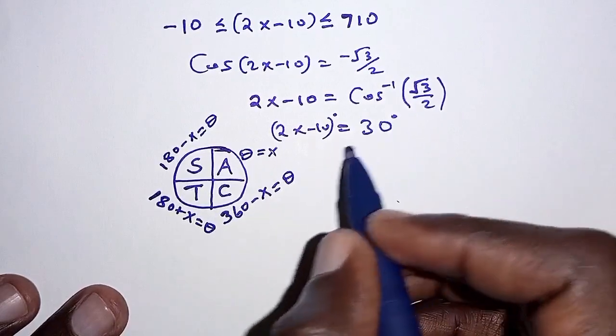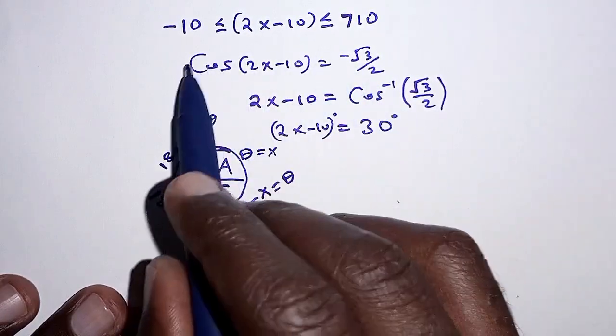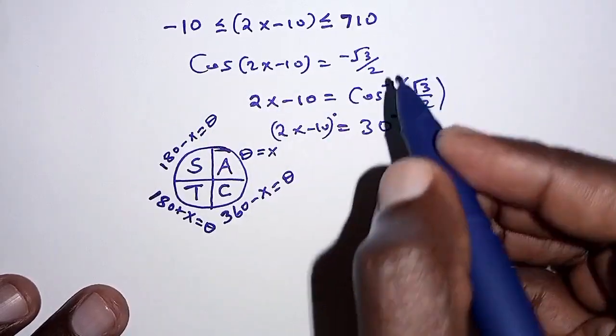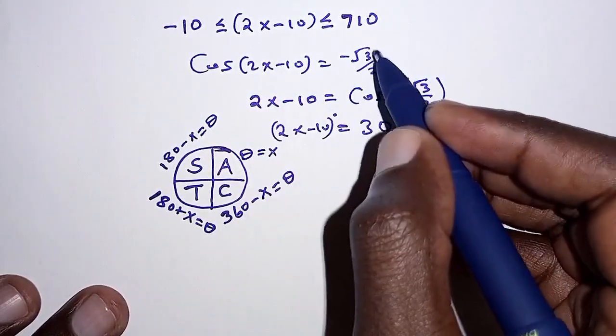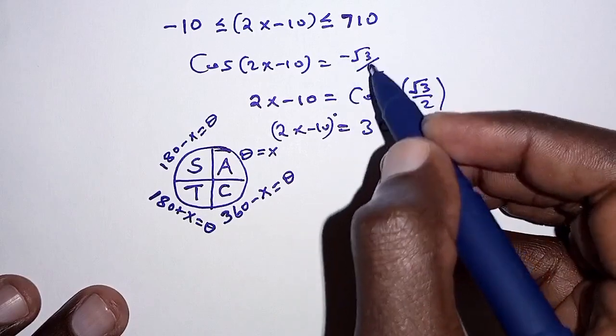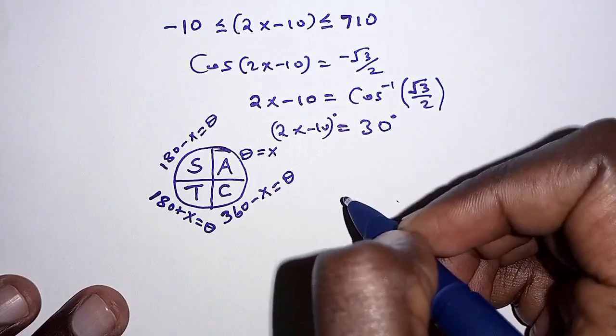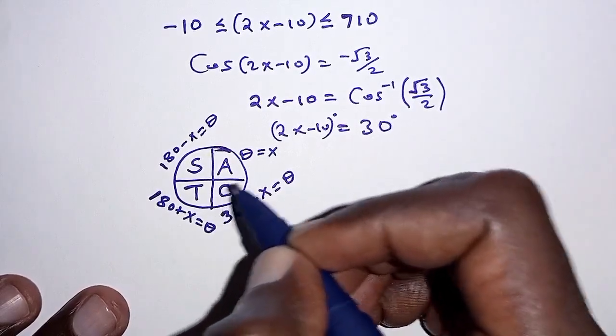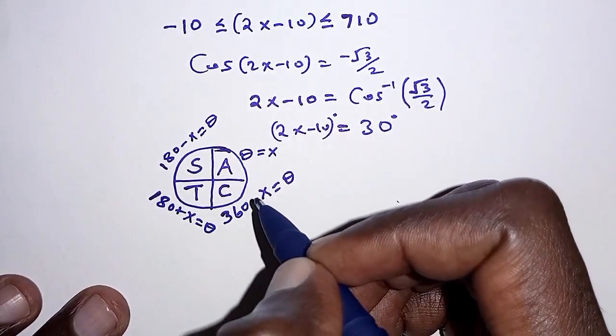So from here, we can therefore come back to this original equation. Remember cosine was a negative number, that is negative root 3 over 2. And because it's negative, we can identify which quadrant to use. So where do we have cosine being negative?